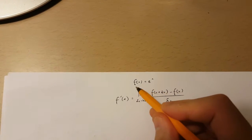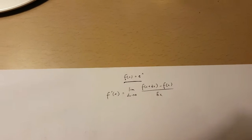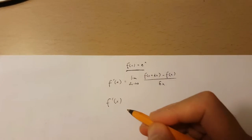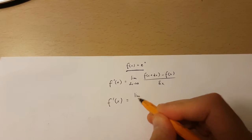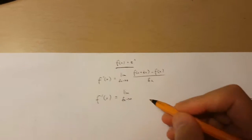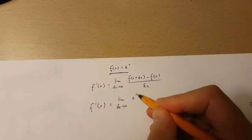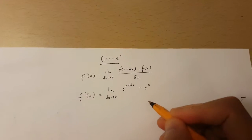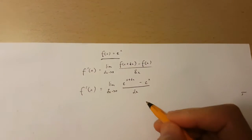Now in this case, the derivative of the function of x is going to be equal to the limit as change in x approaches 0 of e to the power of x plus change in x minus e to the power of x over change in x.